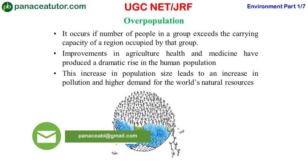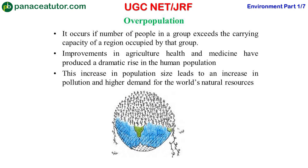First, we will discuss overpopulation. Overpopulation occurs if the number of people in a group exceeds the carrying capacity of a region occupied by that group. Overpopulation can arise due to many factors. For example, there have been a lot of improvements in agriculture and also in the field of medicines, so these factors are responsible for the possible increase in human population.